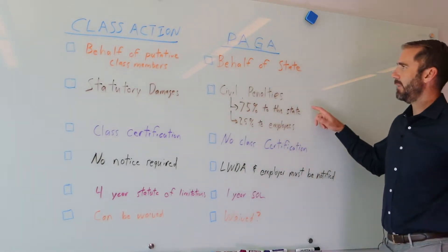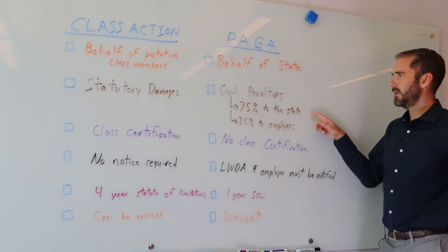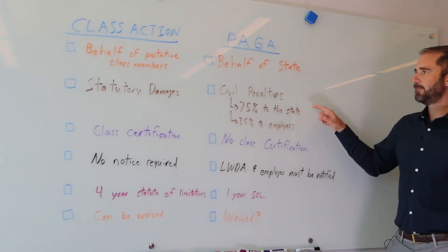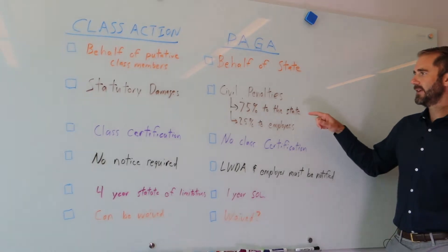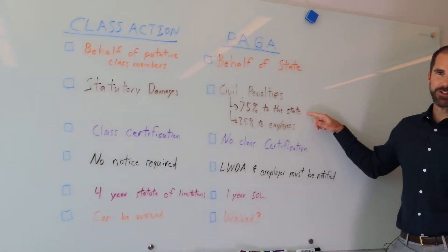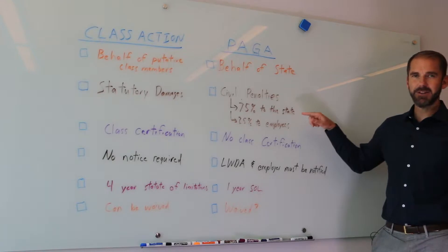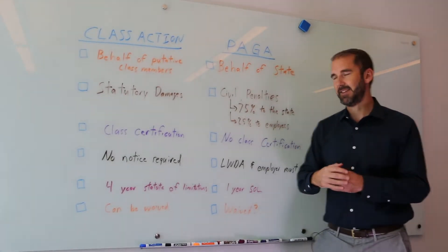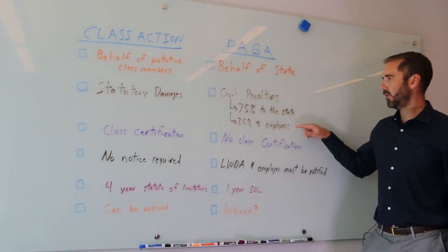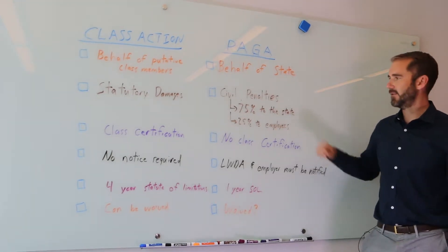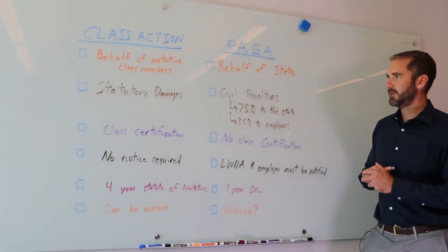PAGA is also known as the bounty hunter law because the employee who brings the PAGA claim has to share 75 percent of the penalties recovered back to the state, and the employees get to keep 25 percent of the recovery. That's a key difference between a class action and a PAGA claim.